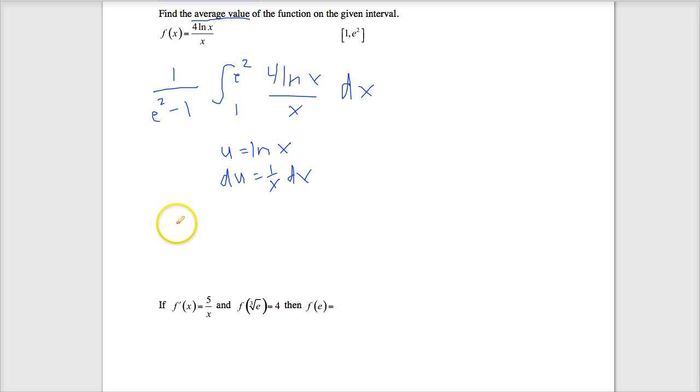And then remember I have to change the bounds. ln of 1, as I told you, or you can check on your calculator, is 0. ln of e squared, you can put that in your calculator also, but I'll just leave it like that for now. And I'll give you a heads up, the answer is 2. And this ln of x right here just turns into u, and this 1 over x dx will just turn into du. And now that's something a whole lot easier, a whole heck of a lot easier than what the original problem looked like. So what I'll do is 4 over e squared minus 1. Again, you can put this in your calculator, but ln of e squared is 2.